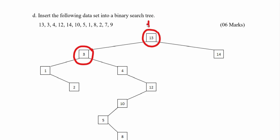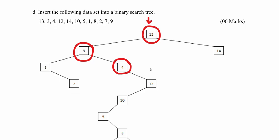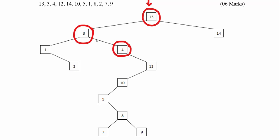Number 4 is less than 13, so I come to the left side. When I compare 4 with 3, number 4 is greater, so it goes to the right-hand side, and I mark number 4 there. Next number is 12: starting from the root, 12 is less than 13, so left-hand side; 12 is greater than 3, so right-hand side; 12 is greater than 4, so again right-hand side — mark number 12. Then we have number 14: it is greater than 13, therefore it goes to the right-hand side of number 13.